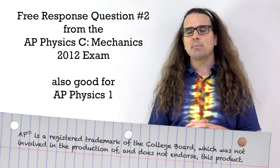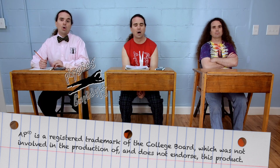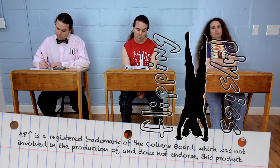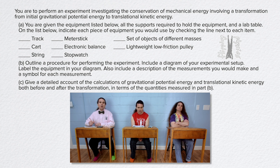Bobby, please read the problem all the way through Part C. You are to perform an experiment investigating the conservation of mechanical energy involving a transformation from initial gravitational potential energy to translational kinetic energy. Part A. You are given the equipment listed below, all the supports required to hold the equipment, and a lab table. On the list below,